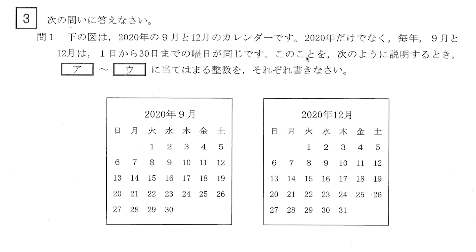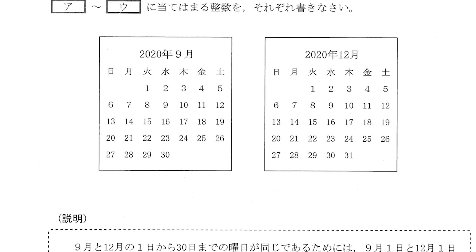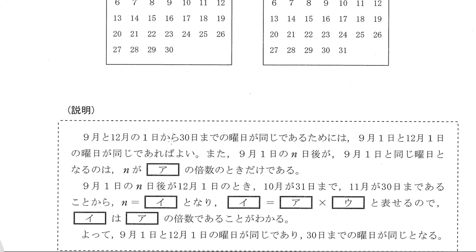問: 2020年の9月と12月のカレンダーを見てみましょう。2020年だけでなく毎年9月と12月は1日から30日までの曜日が同じです。9月と12月の1日から30日までの曜日が同じであるためには、9月1日と12月1日の曜日が同じであればよい。9月1日のN日後が9月1日と同じ曜日となるのはNがある整数の倍数のときだけです。